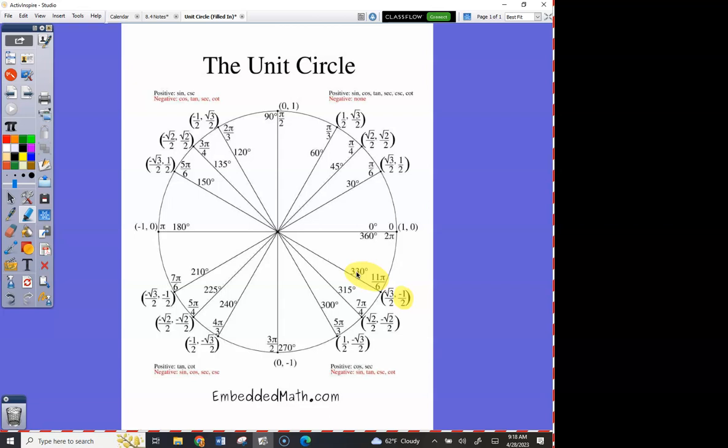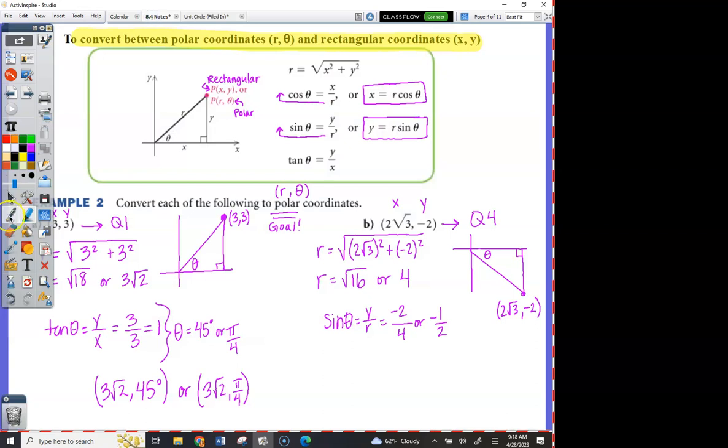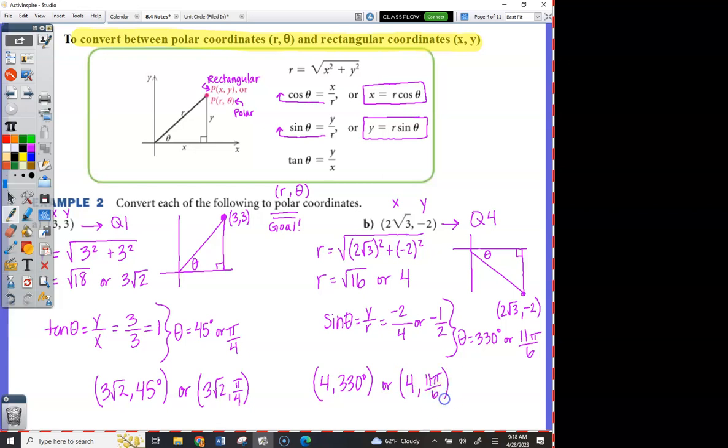So now we just write it as a polar coordinate. This right here we found theta to be 330 or 11 pi over 6. So write your polar coordinate, look at the formula, it's r comma theta. r was 4, theta was 330, and I'm going to write both for the same reason I wrote both in the last problem.